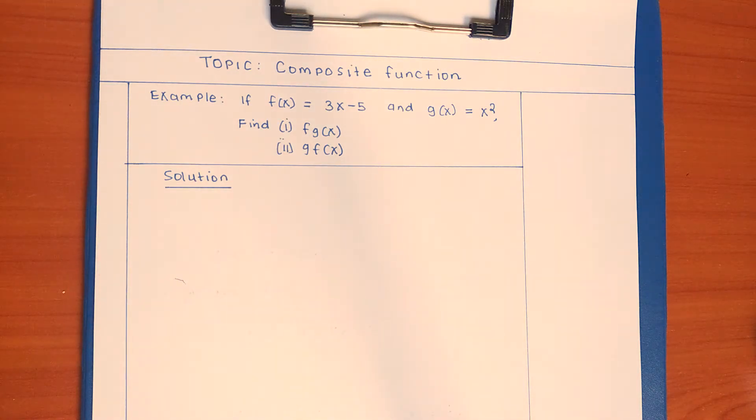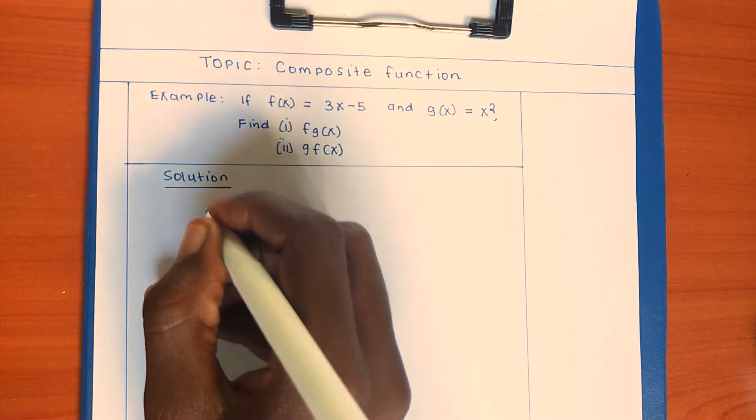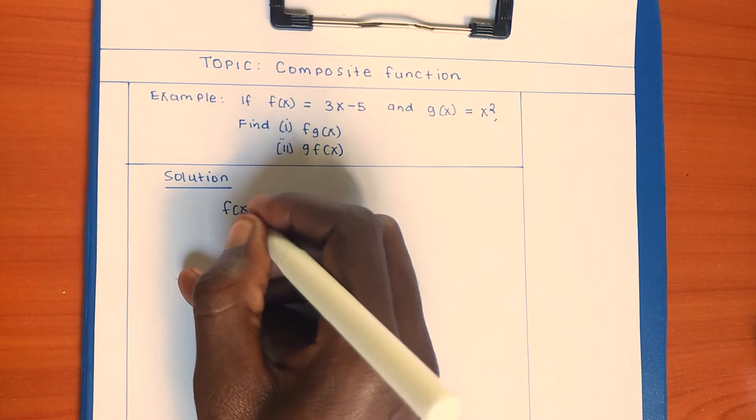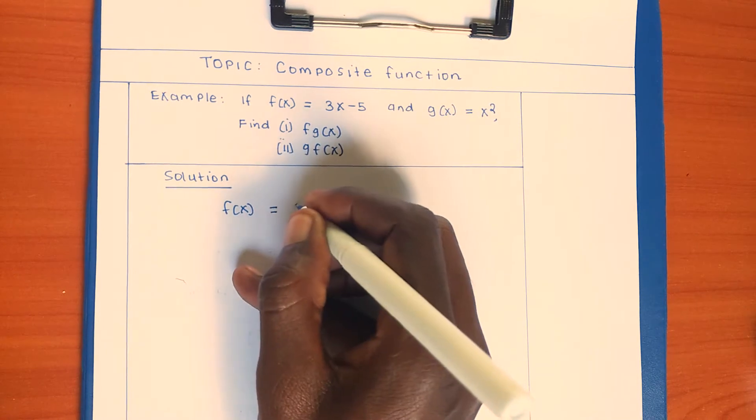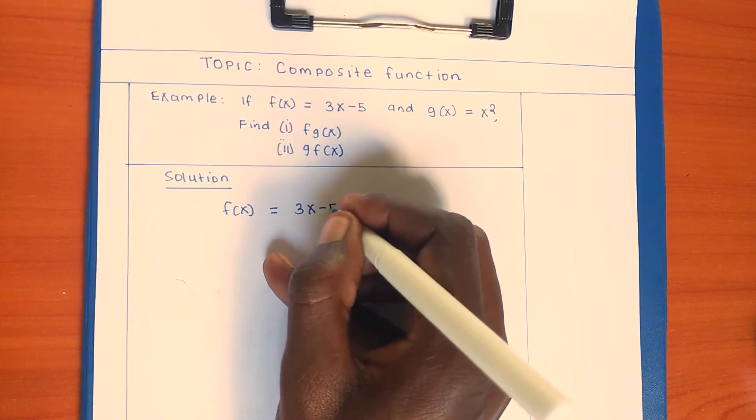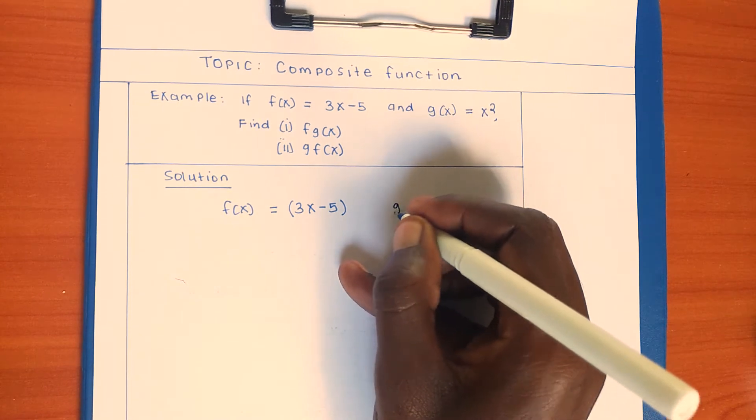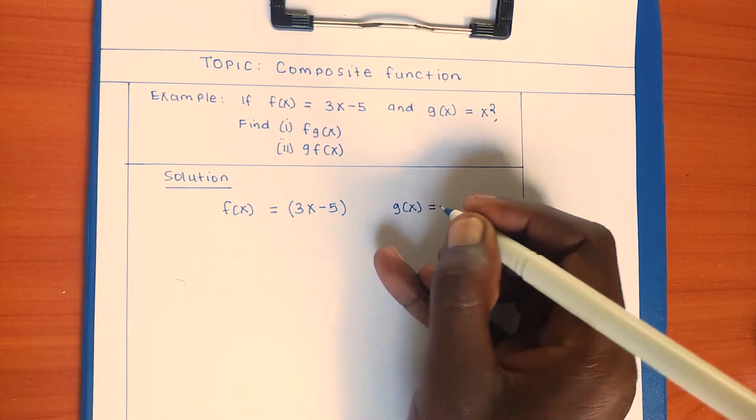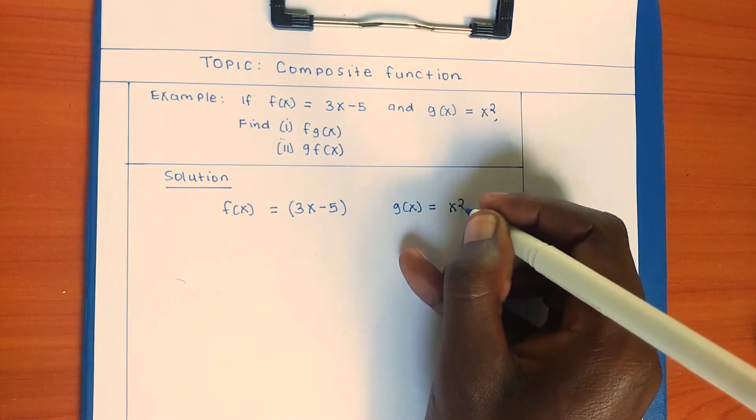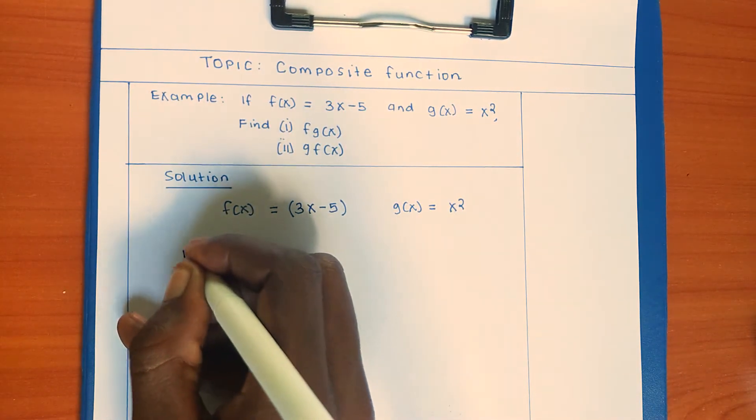Let's start the solution. f(x) is given by 3x - 5, and g(x) is equal to x². So let's answer part one.